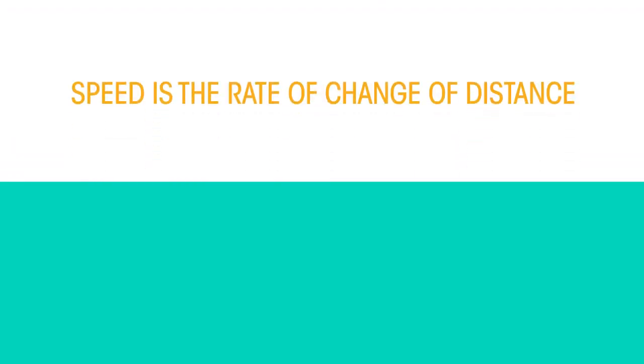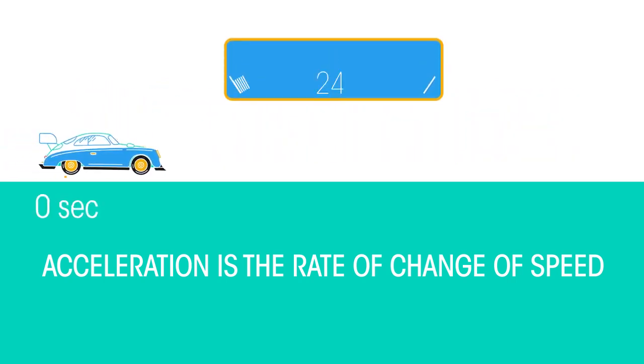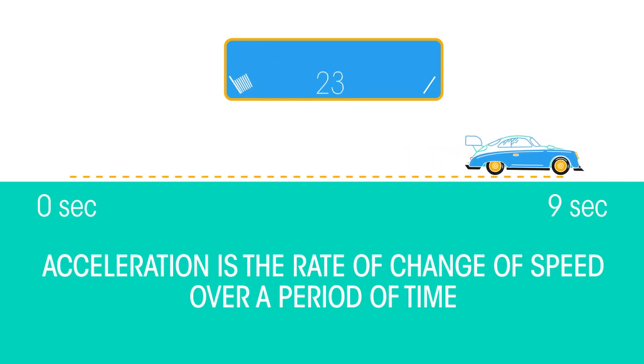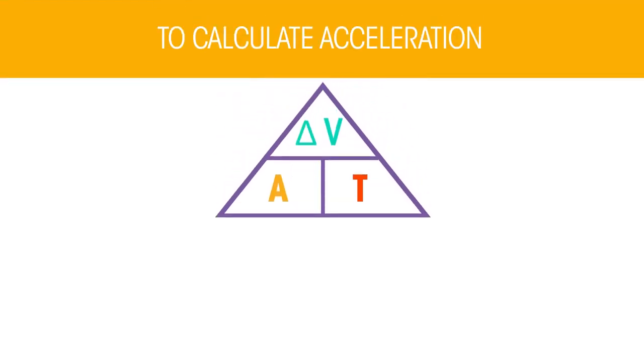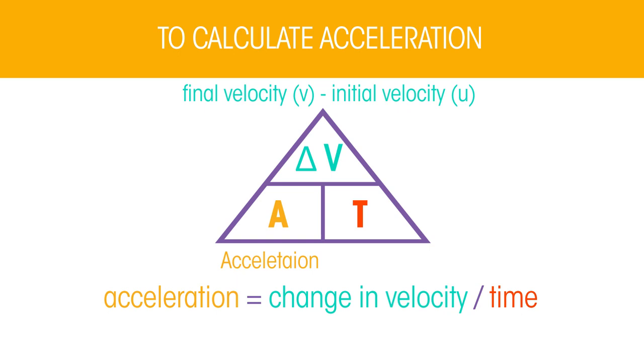In the same way that speed is the rate of change of distance, acceleration is the rate of change of speed. This means that the acceleration of an object is a measure of how much its speed changes over a given period of time. To calculate acceleration, we use the following equation: acceleration is equal to change in velocity divided by time.